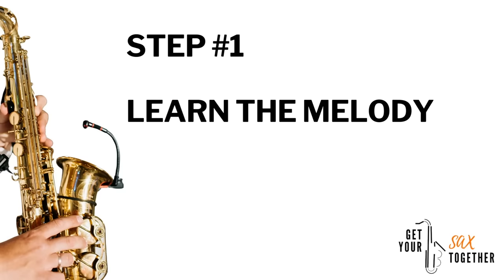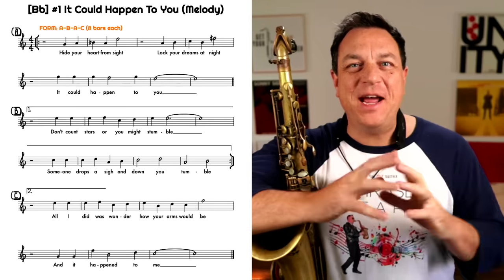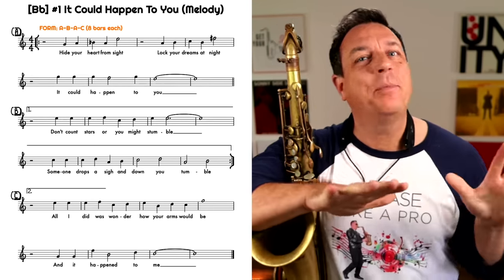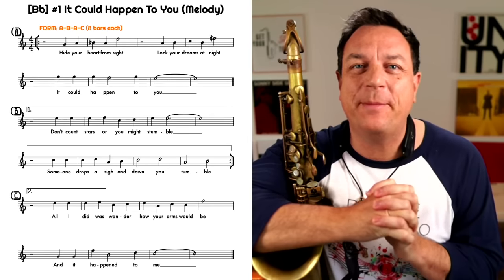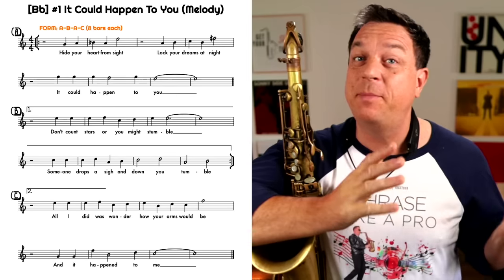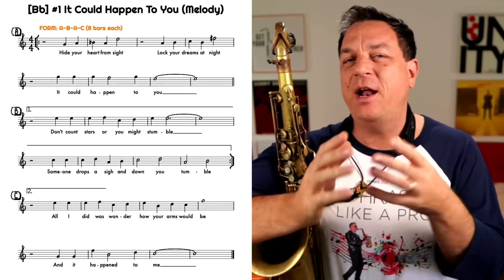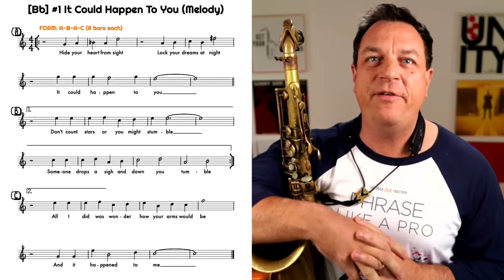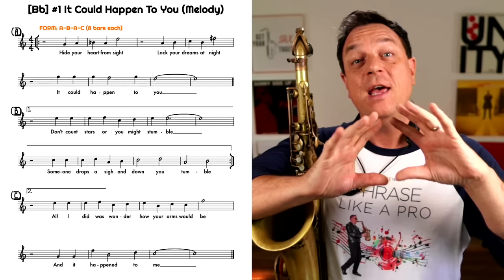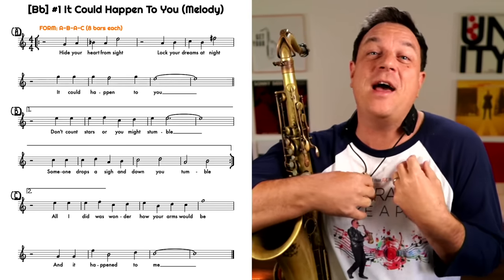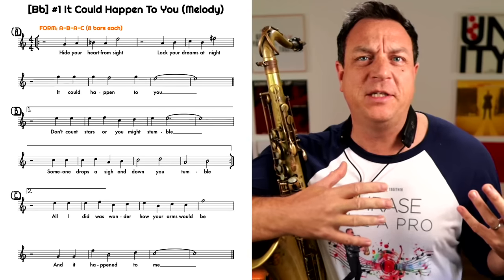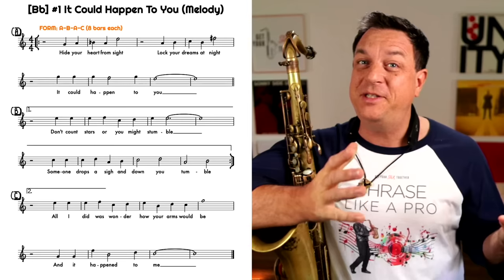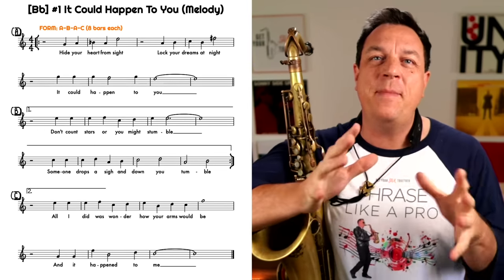Here's step one. For step one it's quite simple: you are going to learn the melody of your song. Now this process can apply to anything that you're learning, but I'm specifically thinking about jazz standards. It'll work for any song. If it's a jazz tune without lyrics there's obviously no lyrics to learn, but in the case of a standard you might want to learn the lyrics as well — it'll give you a vibe for the song and for the phrasing. I'm not the guy who says you must know the lyrics, but I do fully understand that it is a useful process. So the first step is to learn the melody.